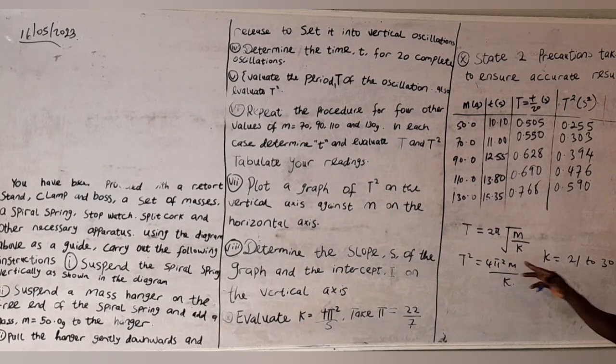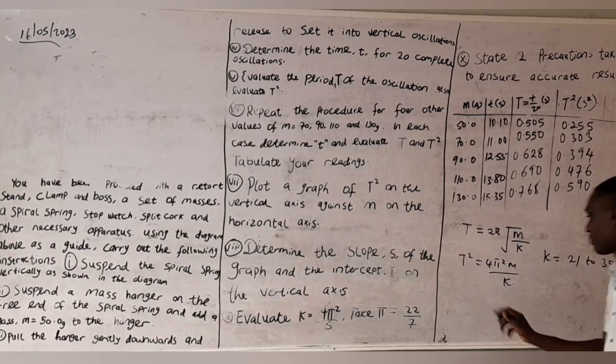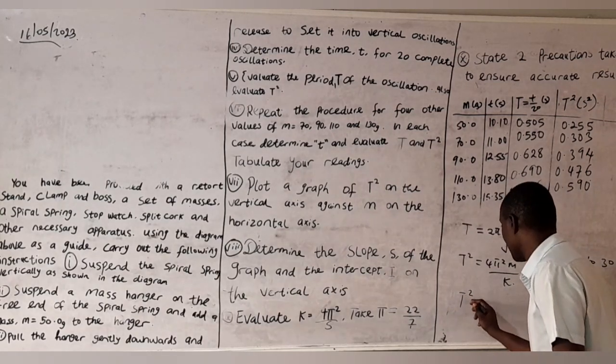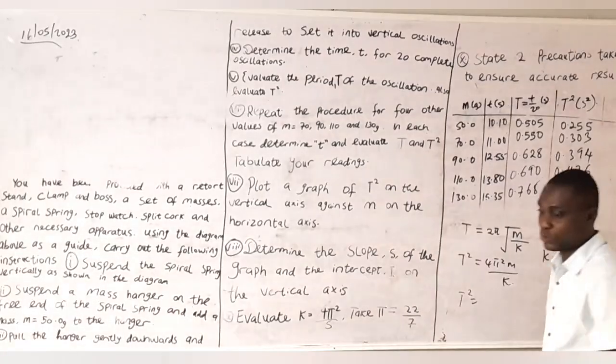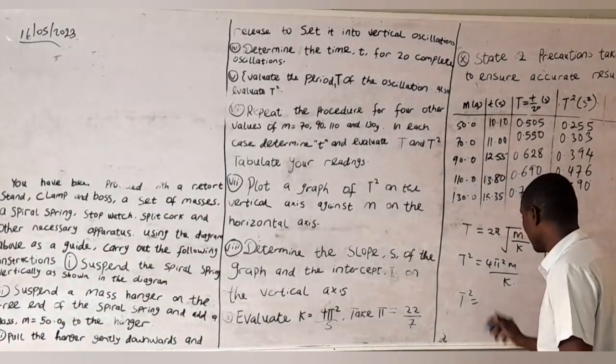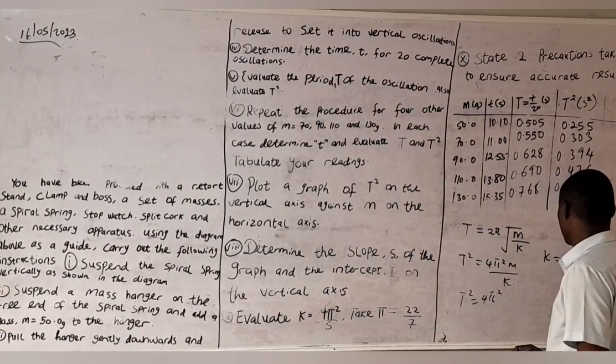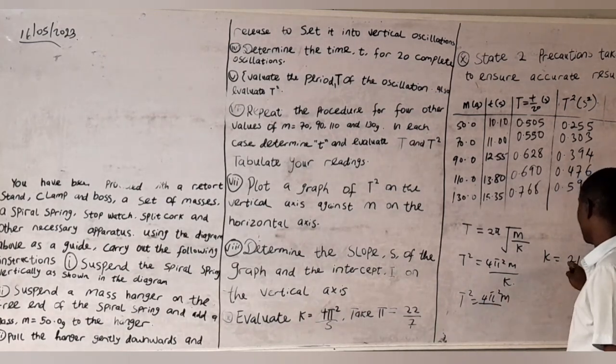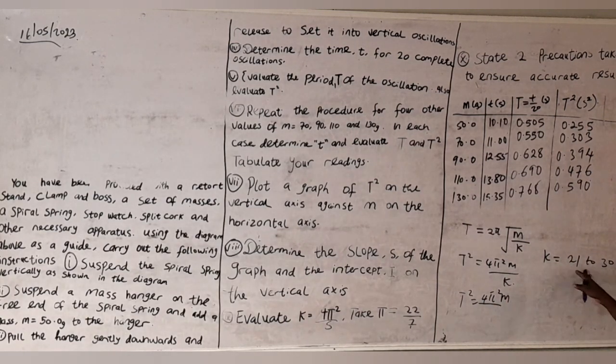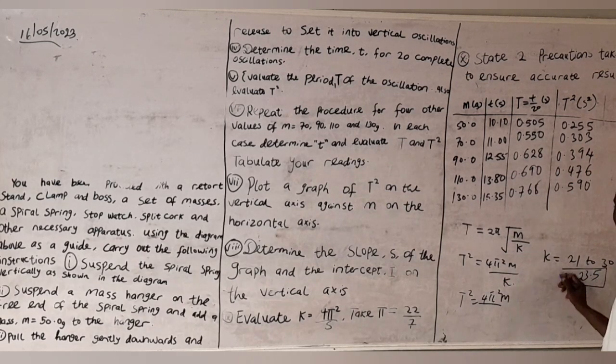When you choose a value for k, you will be able to evaluate this equation. What you need to do is just to substitute m, the value of m, into this equation. So I'll work this out. I'm going to have T² = 4π² divided by k times m. Let me choose a value between 21 and 30. I'll go with 23.5.